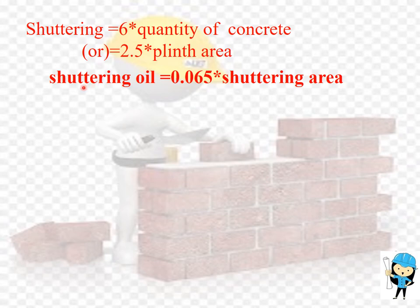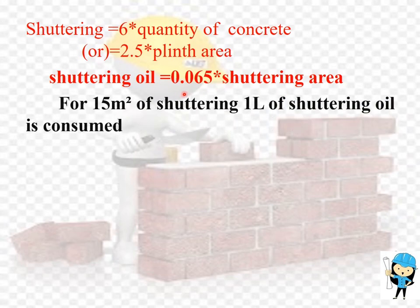Now we are going to calculate the quantity of shuttering oil required. The quantity of shuttering oil required is calculated by the formula: 0.065 × shuttering area. This is an important constant: for 15 m² of shuttering area, 1 litre of shuttering oil is consumed. This is very important data.